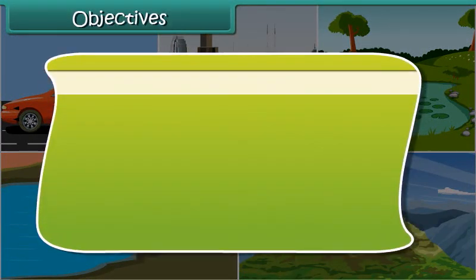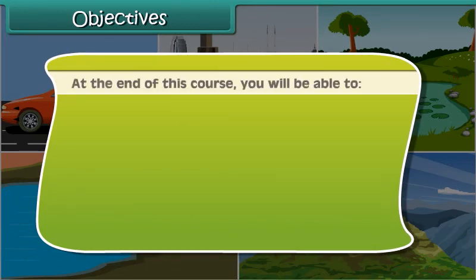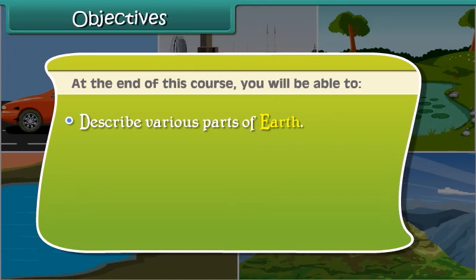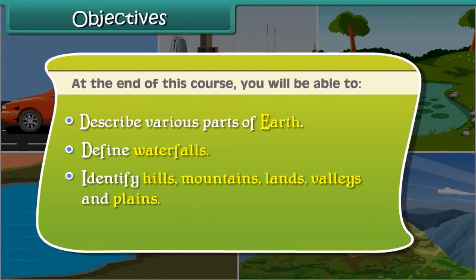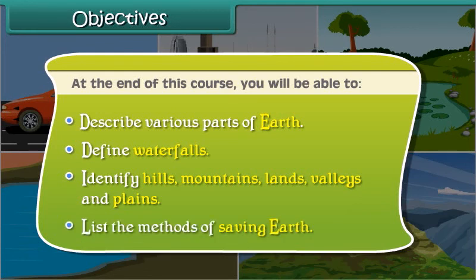At the end of this course, you will be able to: describe various parts of Earth, define waterfalls, identify hills, mountains, lands, valleys and plains, and list various methods to save our Earth.